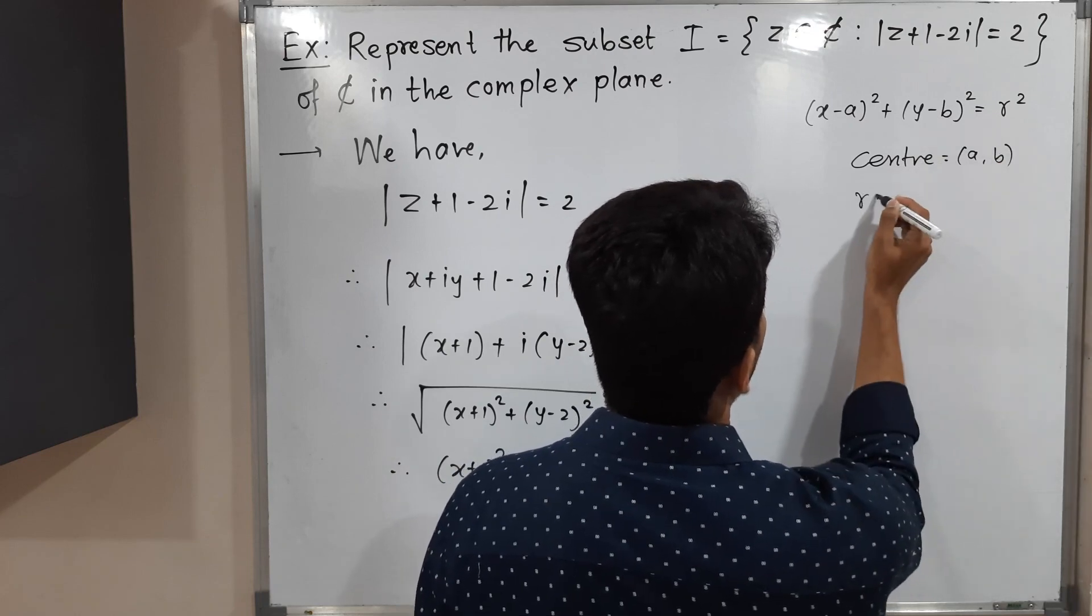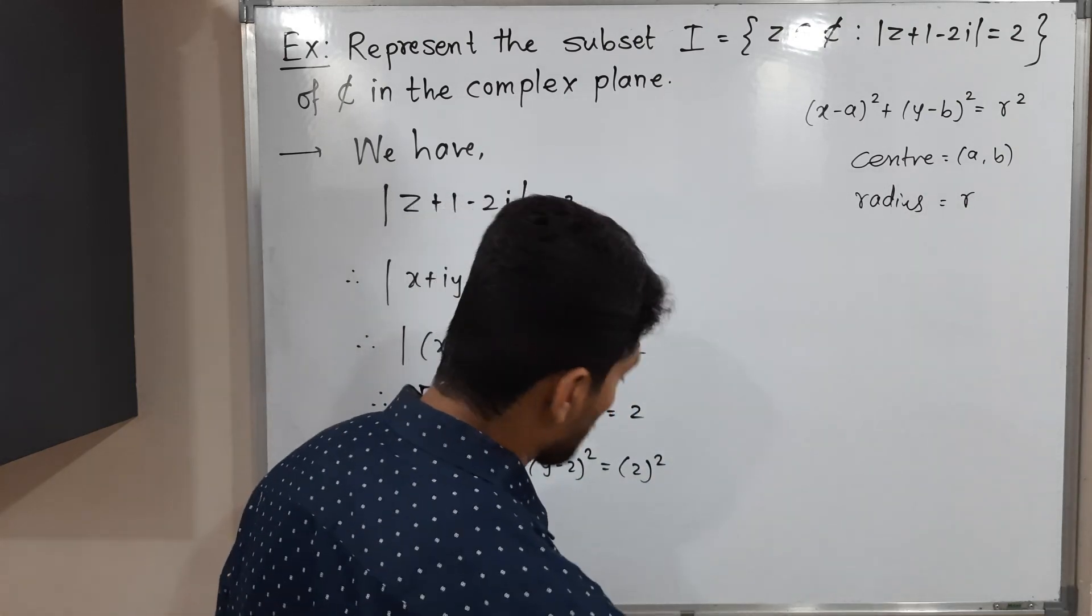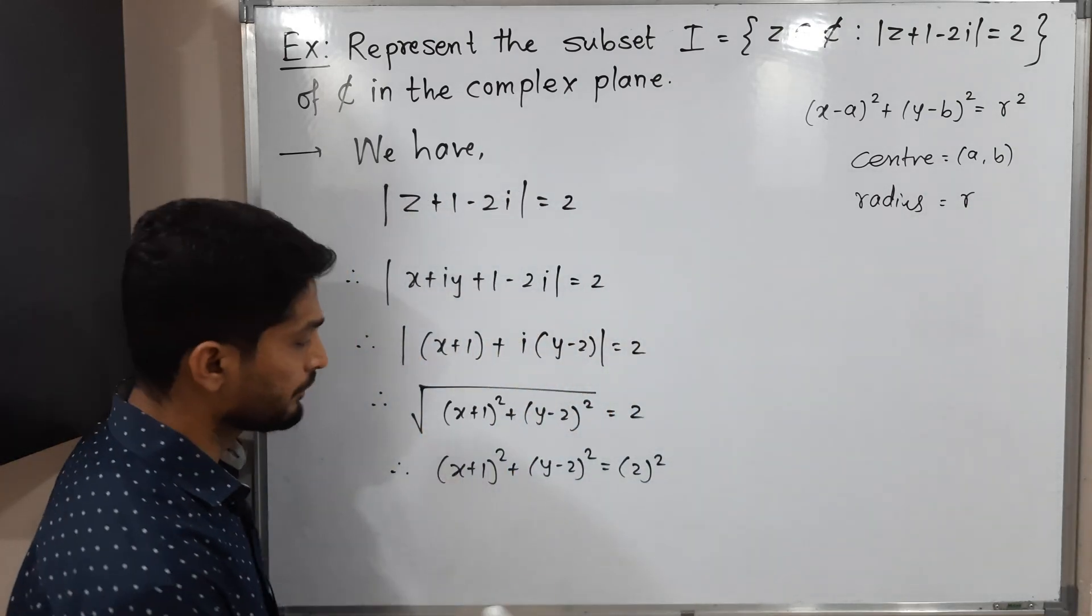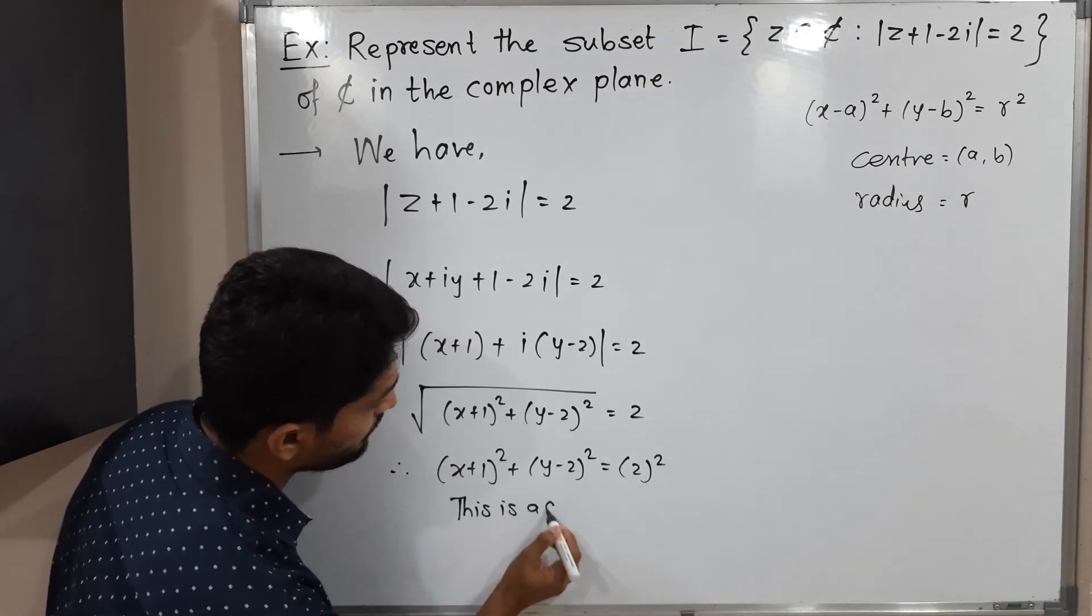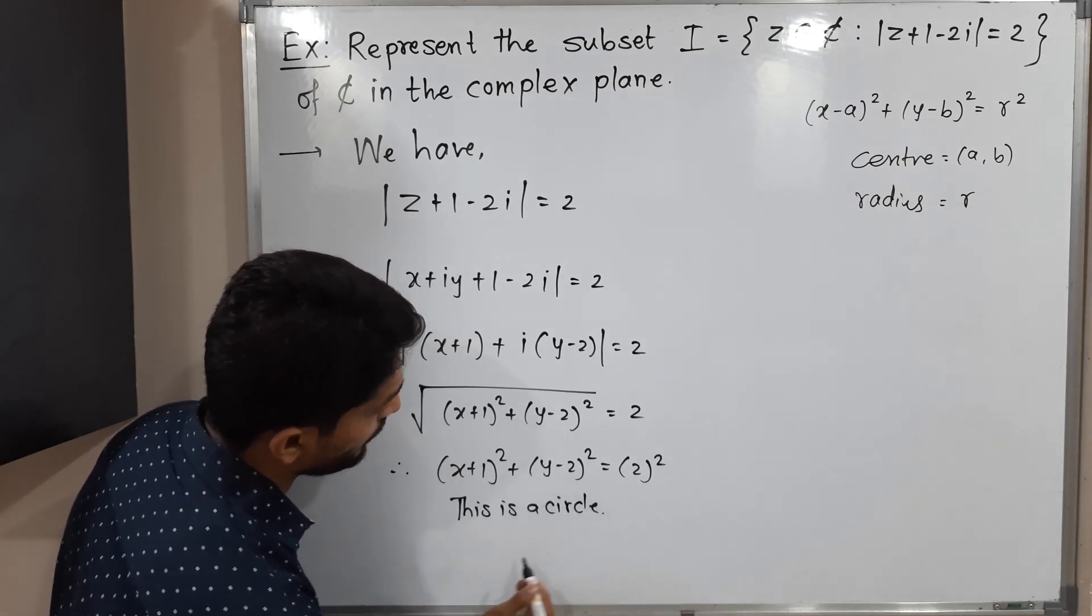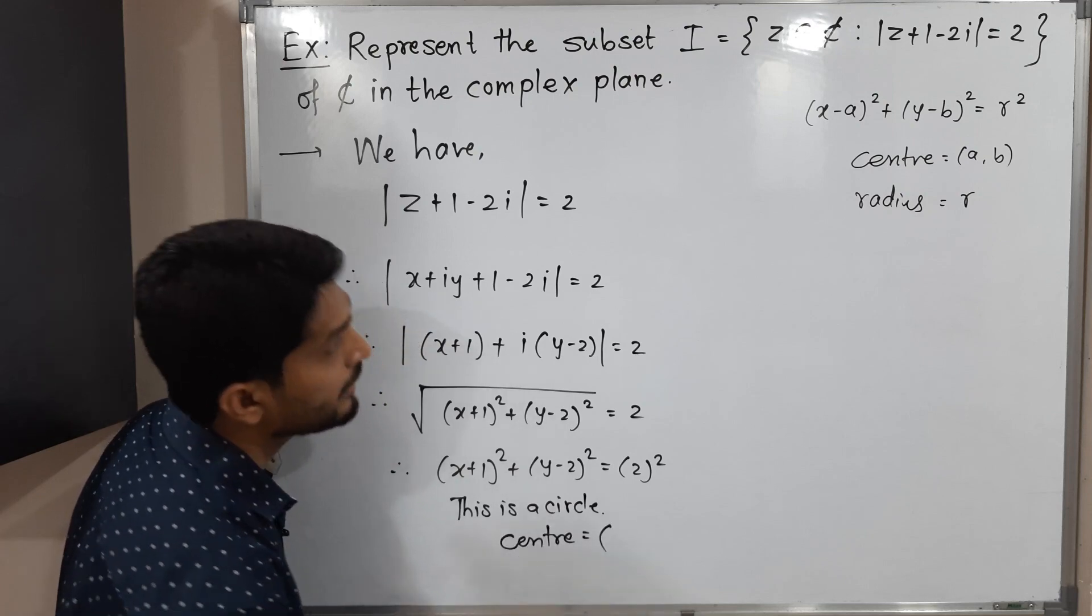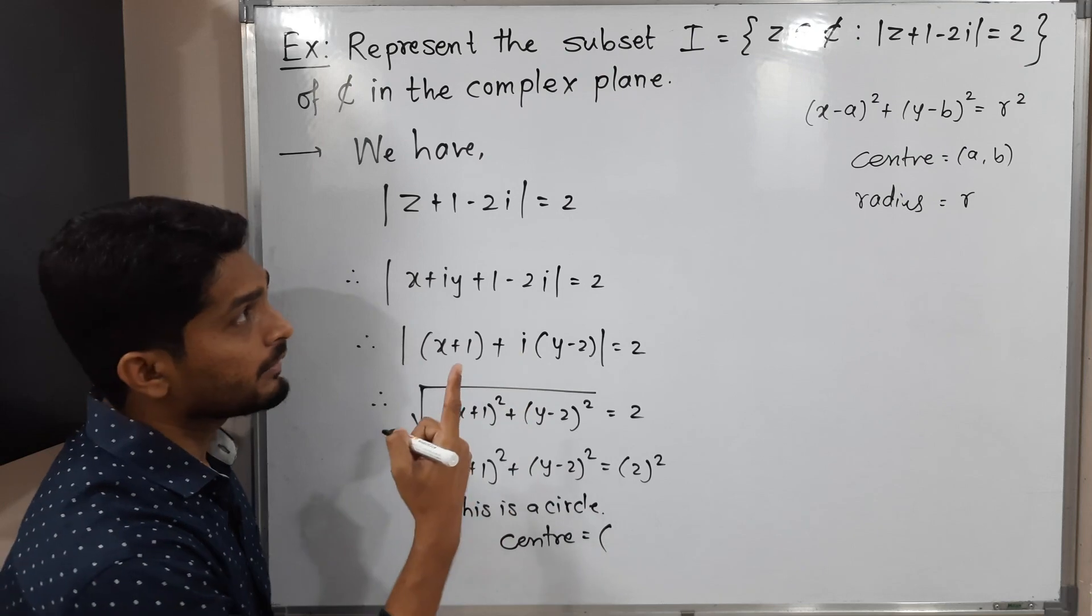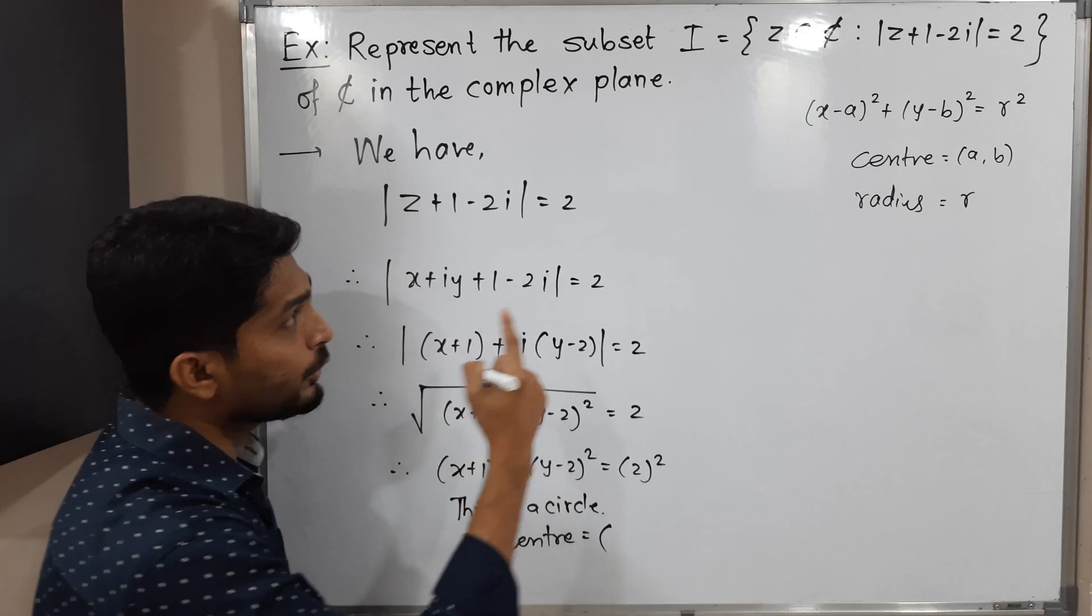So let us compare this equation with that. This is a circle we have got. What will be the center? If you compare, we get a = -1, because actually in the definition we have a minus sign. We can easily adjust: plus means minus times minus, so x minus (-1) is nothing but plus.